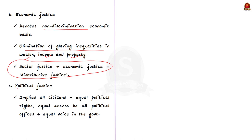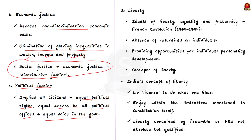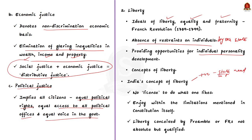Lastly, coming to political justice — it implies that all citizens should have equal political rights, equal access to all political offices and equal voice in the government. Now, moving on to the term liberty. The ideals of liberty, equality and fraternity in our preamble have been taken from the French revolution. The term liberty means the absence of restraints on the activities of individuals by the state, and also means providing opportunities for the development of individual personalities. There are two concepts: positive liberty means the presence of an atmosphere in which an individual can fully develop to his potential, where the state has an obligation to provide the necessary conducive environment. Negative liberty denotes the absence of external limits imposed on the individual by the state.